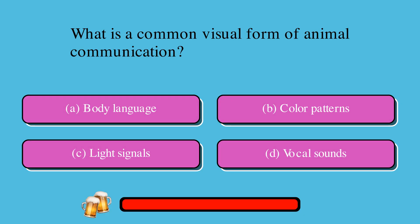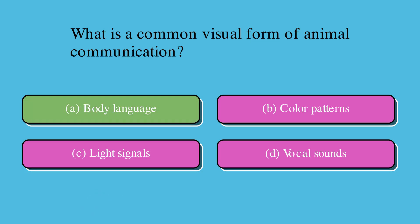What is a common visual form of animal communication? A. Body language, B. Color patterns, C. Light signals, or D. Vocal sounds. The correct answer is A. Body language.